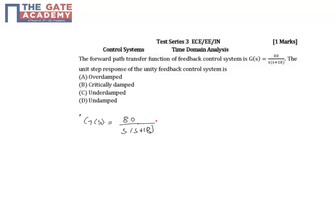So we can solve this problem by taking R(s) equal to 1 by s. First we have to find the closed loop transfer function and then multiply it with 1 by s, and then take the inverse Laplace of that, from which we will know the kind of response the system has exhibited. Instead of doing that, we can do it in a much simpler way.